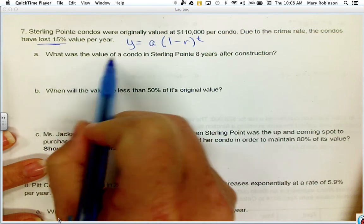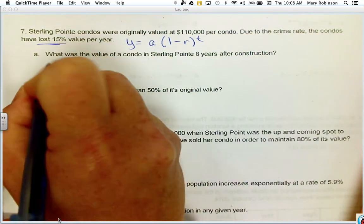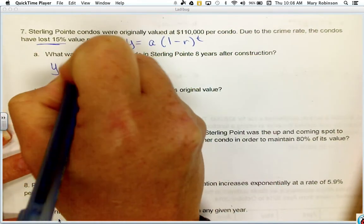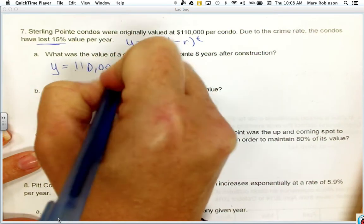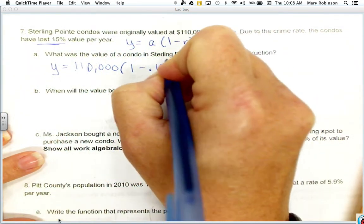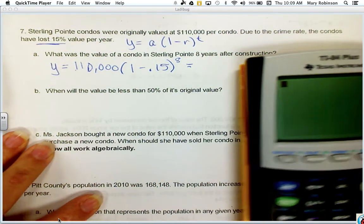It asks, what is the value of a condo 8 years after construction? If we don't know the value in 8 years, that's our Y, but we do know the original value is $110,000, and that it loses value at a rate of 15% per year for 8 years. We simply need to plug into the formula and evaluate.